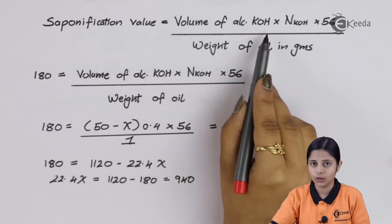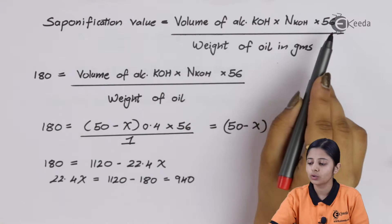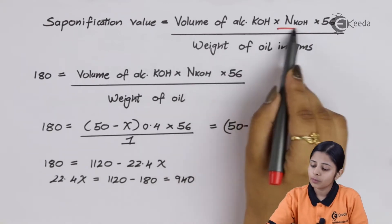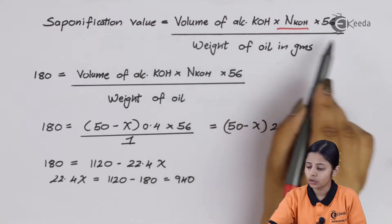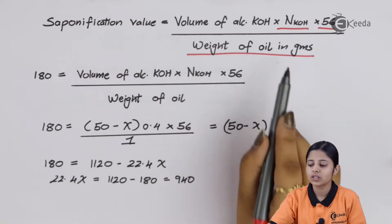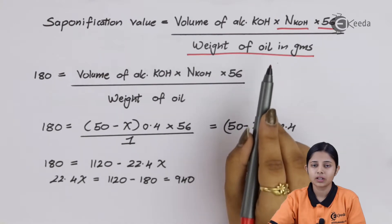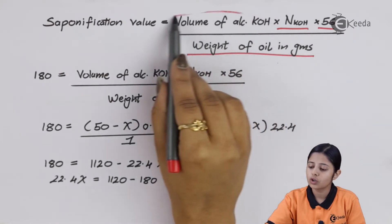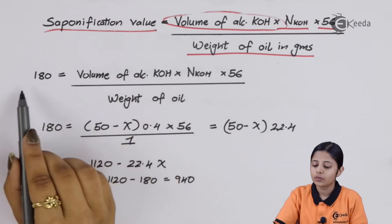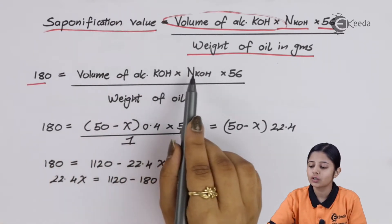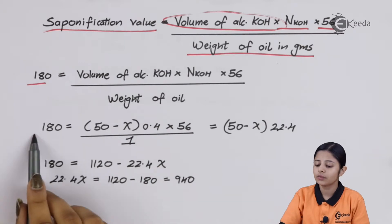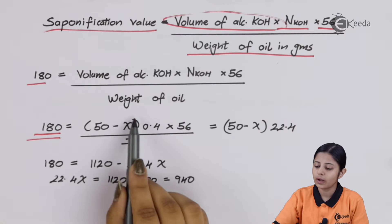The formula is: Saponification Value = (Volume of alcoholic KOH × Normality of alcoholic KOH × 56) / Weight of oil in grams. The normality is 0.4, weight of oil is 1 gram, and 56 is a constant. The saponification value is given as 180 mg. So we write: 180 = Volume of alcoholic KOH × 0.4 × 56 / 1.